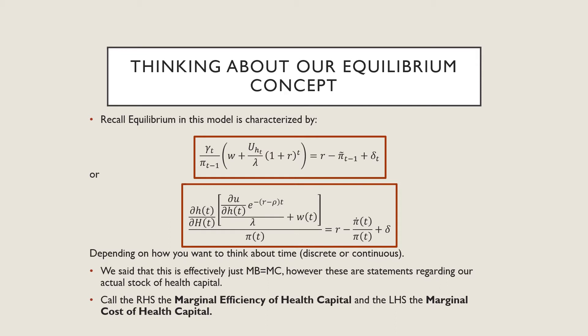So let's first think about our equilibrium concept. Recall, equilibrium in this model is characterized by one of these two equations, depending on whether we're using a discrete time case, which is our first equation, or a continuous time case, which is our second case. Note that this is effectively just where marginal benefit is equal to marginal costs.